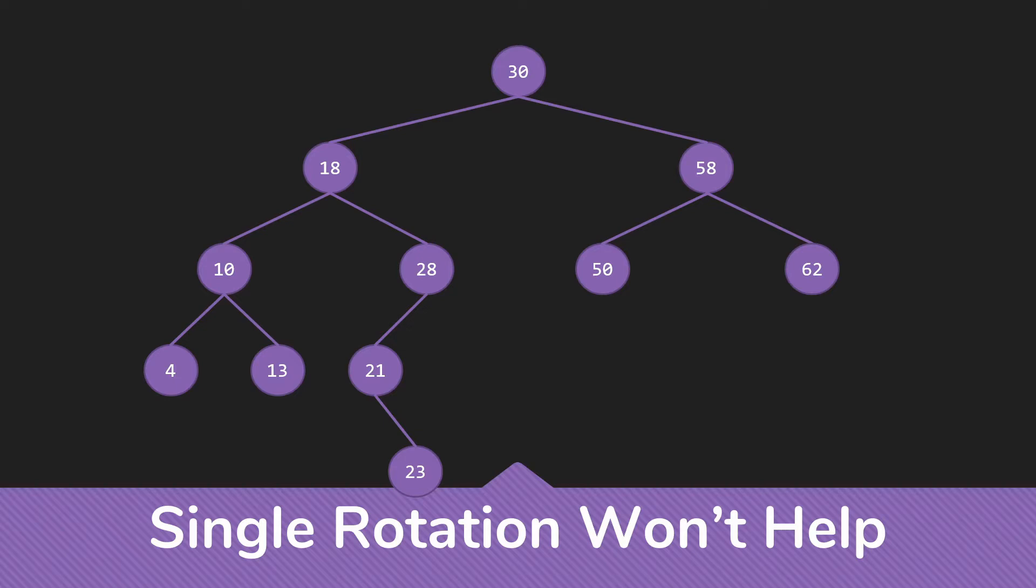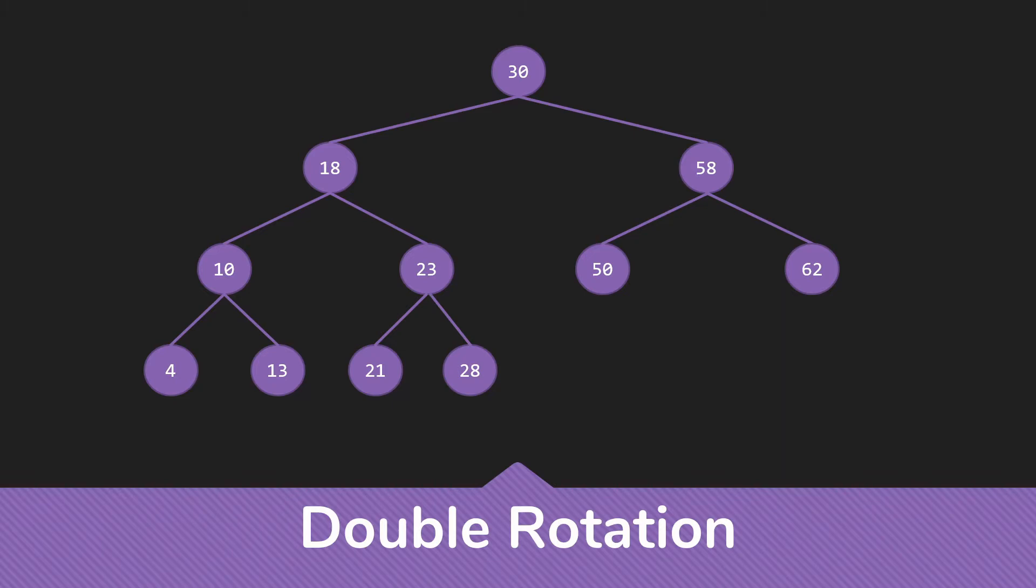So for these circumstances, instead of using this single rotation that we used with the 50 and the 58, we're going to use what we call a double rotation. So in this case, we pull the grandchild up and make the parent and grandparent the left and right children, like so.